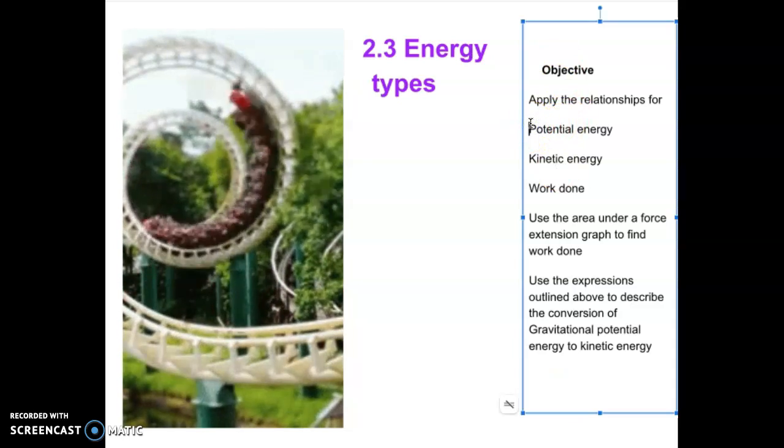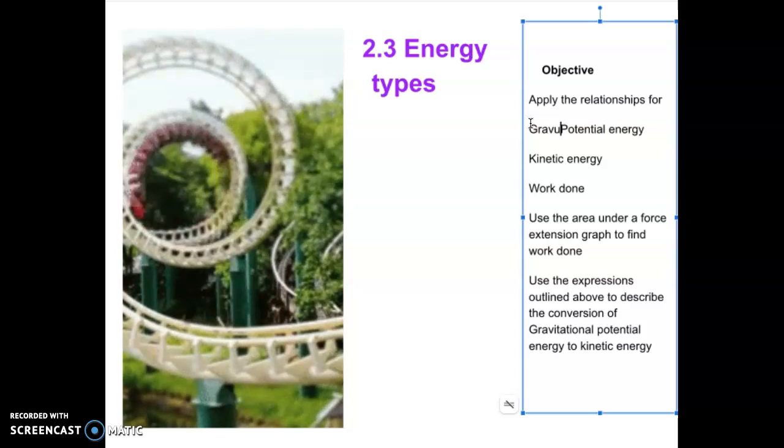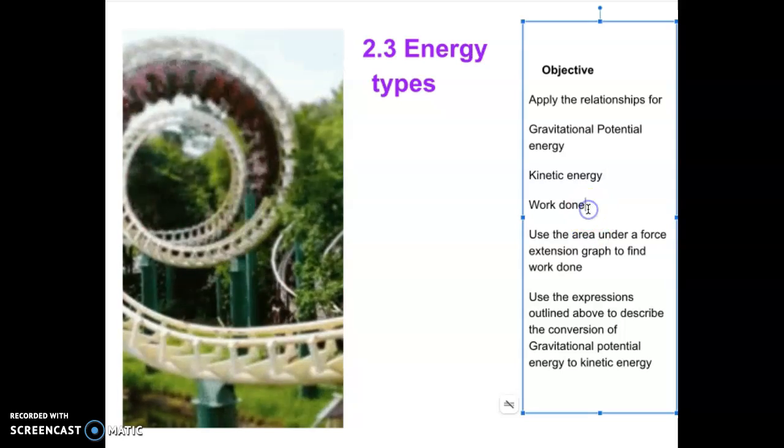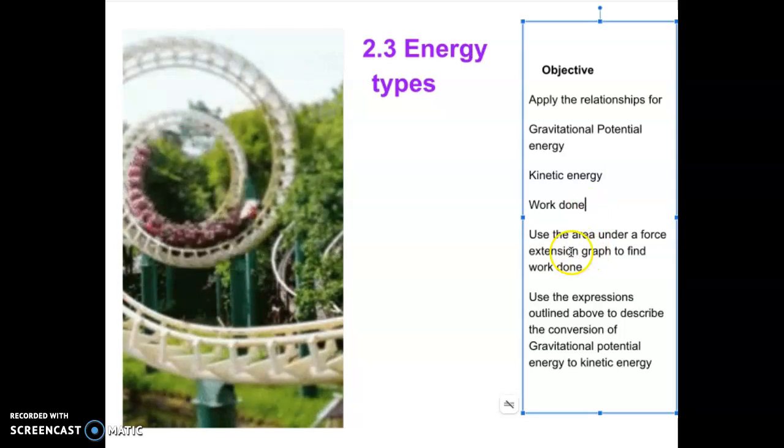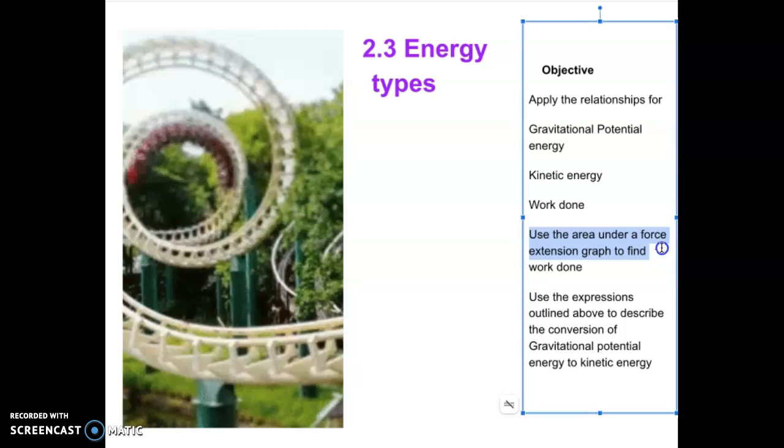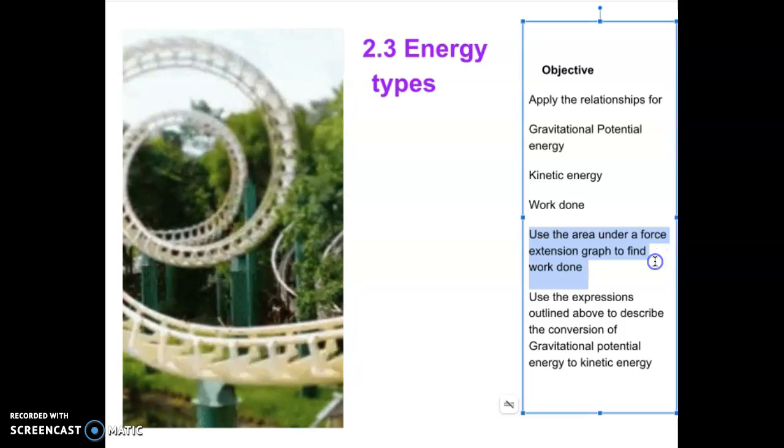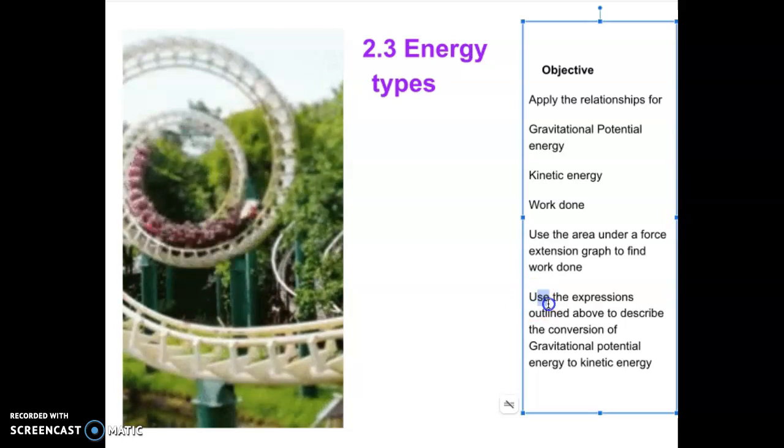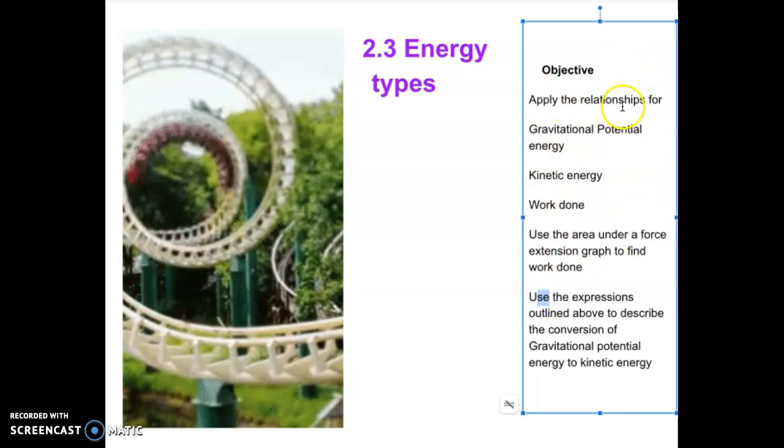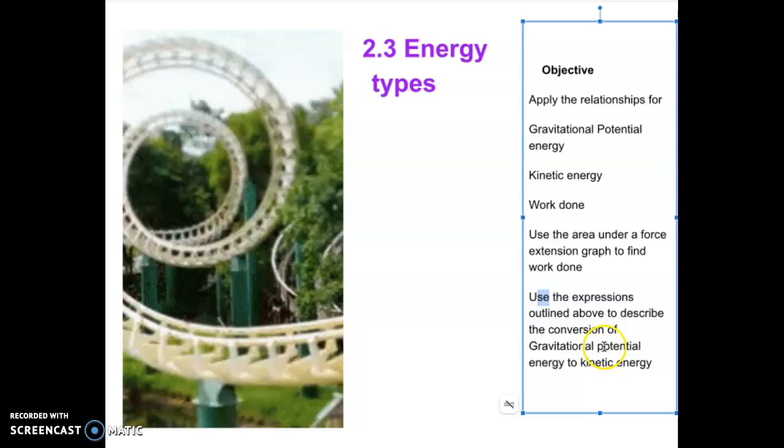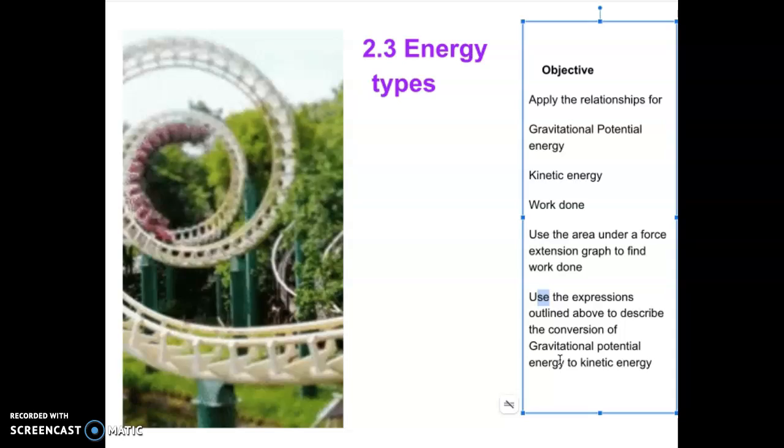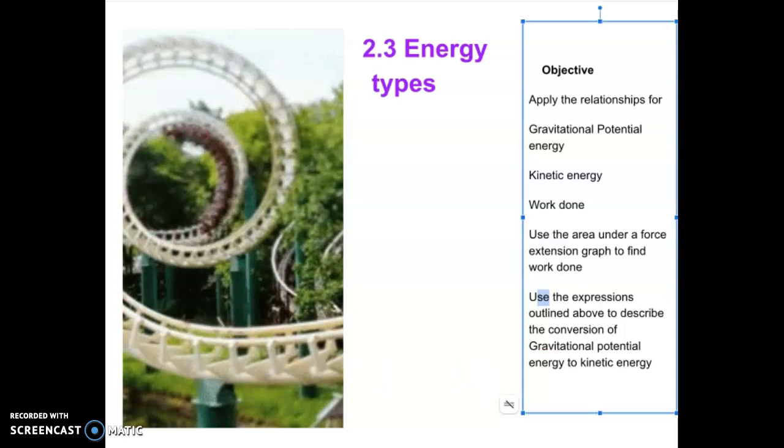We'll look at kinetic energy, work done a little bit more carefully, and a force extension graph to find work done or force distance graph. We're going to take all of these ideas and use them to work out some conversions, what happens when we go from gravitational to kinetic and back again.